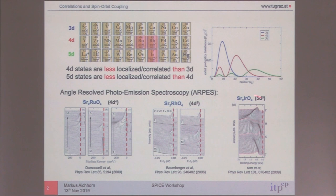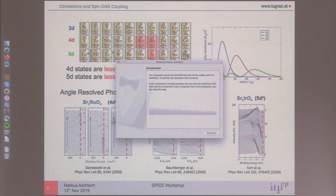You have this series of materials. At the time when this came up, it was a surprise that iridates can be insulating, because it's a 5D material. Up to this point, it was considered to be rather uncorrelated — electrons are not so localized, Hubbard interactions should be small.